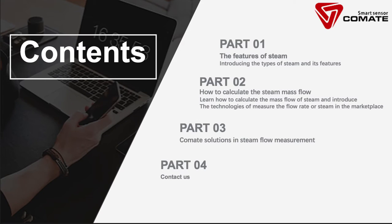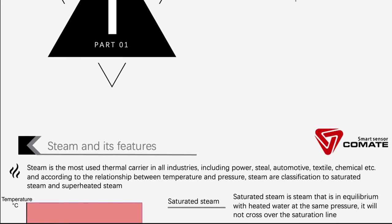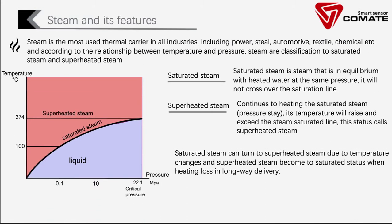Let's start with the physics of steam first, and then look at how to calculate the steam mass flow rate. Steam is divided into saturated steam and superheated steam according to the relationship between temperature and pressure.